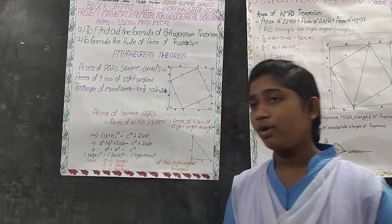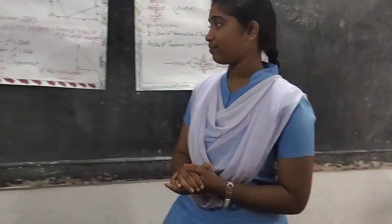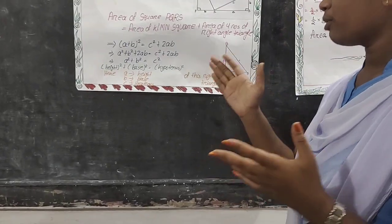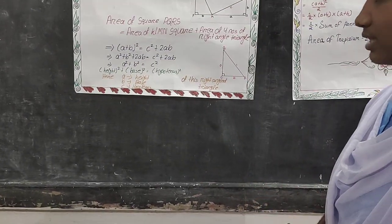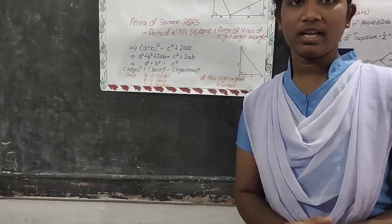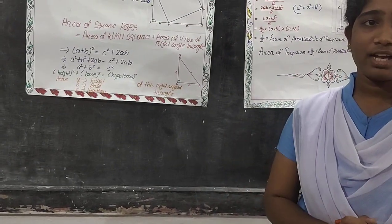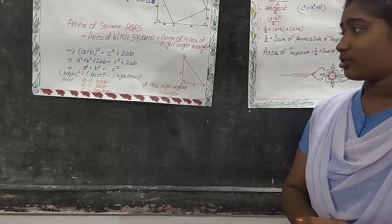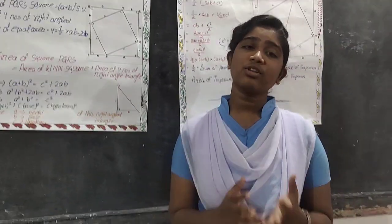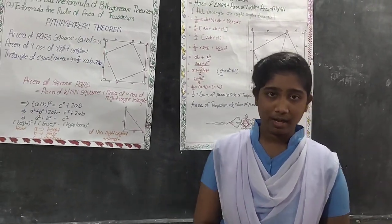We know A plus B whole squared equals A squared plus B squared plus 2AB, which equals C squared plus 2AB. Cancelling 2AB from both sides, we get A squared plus B squared equals C squared. A squared is the height squared, B squared is the base squared, and C squared is the hypotenuse squared. So height squared plus base squared equals hypotenuse squared.